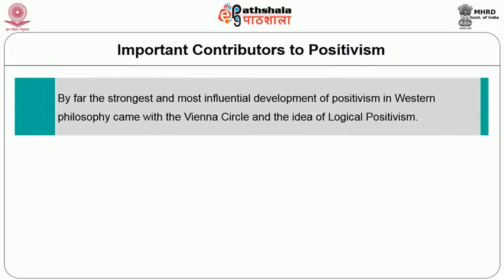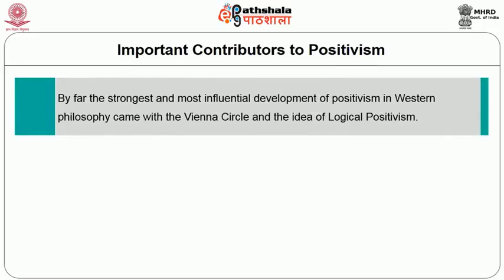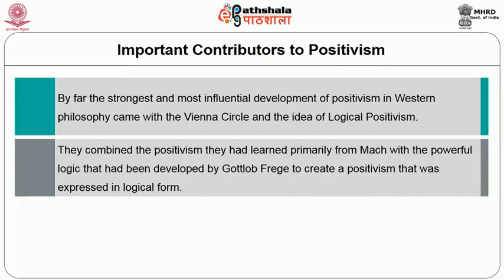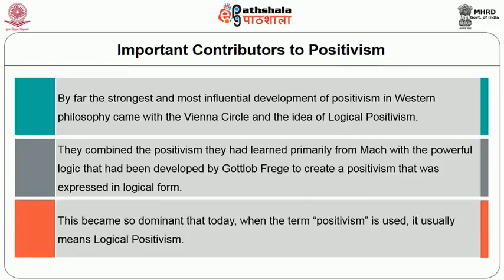By far the strongest and most influential development of positivism in western philosophy came within the Vienna Circle and the idea of logical positivism, also known as logical empiricism. They combined the positivism they had learned primarily from Mach with powerful logic developed by Gottlob Frege to create a positivism expressed in logical form. This became so dominant that today when the term positivism is used, it usually means logical positivism.